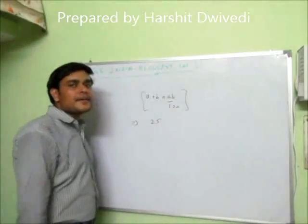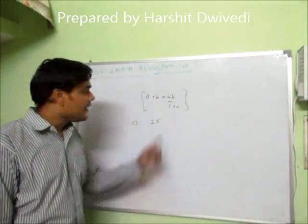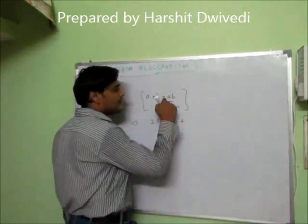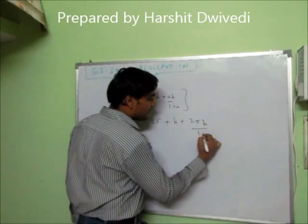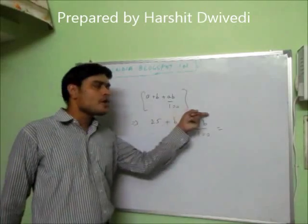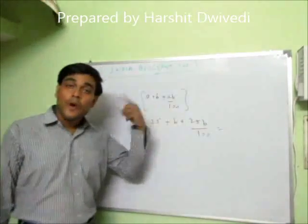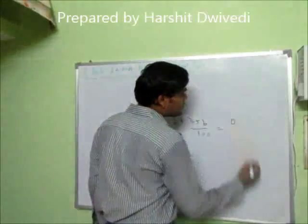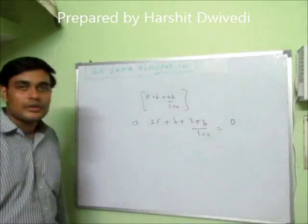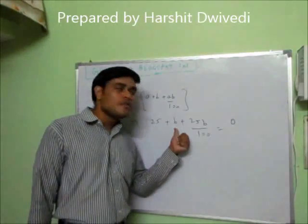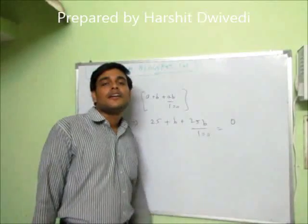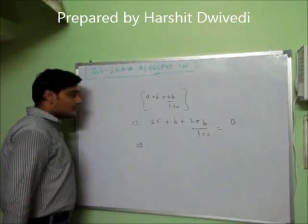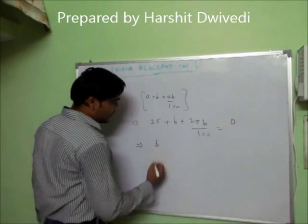And B is the percentage decrease in consumption, but I don't know the value so I write only B. Then 25 plus B plus 25 into B by 100. Now this is the overall percentage increase — in expenditure. But expenditure is not increased, so the overall percentage increase equals 0. By this we are going to calculate the value of B, and this B will be the decrease in consumption. Let us solve this.